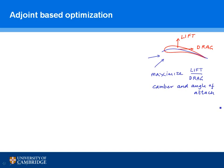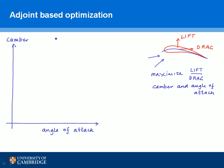If we draw these on two axes, with angle of attack on the horizontal axis and camber on the vertical axis, we want to find the place on this plot where lift over drag is maximized. We might try one spot and find lift over drag is 3, try another and find it's also 3, another at 2.9, another at 2.5, and continue this process until we find the maximum lift over drag — say around 4.1. This trial and error way of doing optimization is very costly and inefficient.